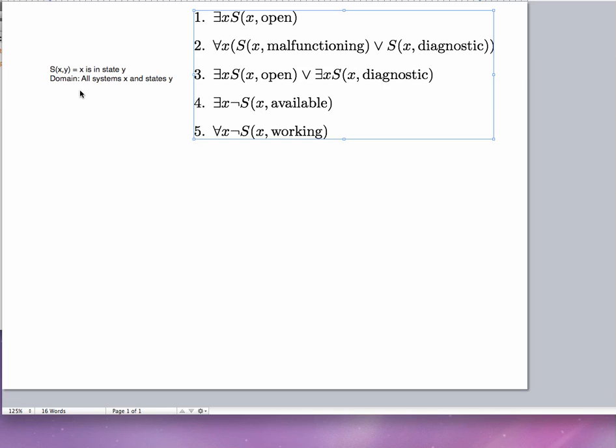S(x,y) is a propositional function that has to do with systems like computer systems and states that those systems may be in. S(x,y) means that x is in state y, and so S has a built-in English translation to it. We just need to put it together with the logical symbols and make some sense out of it.